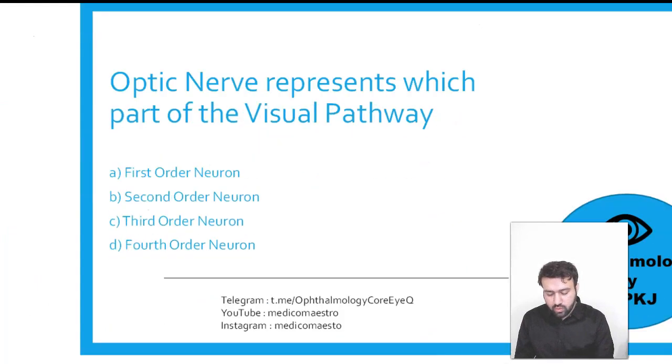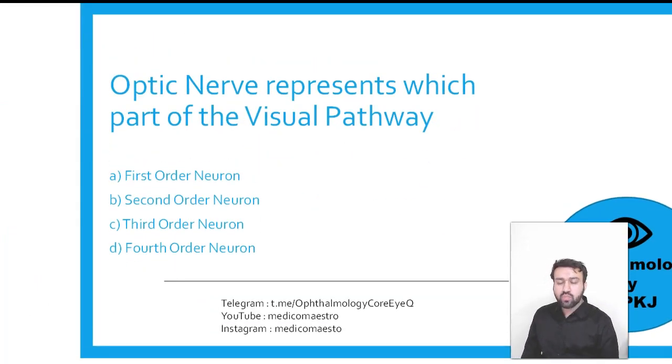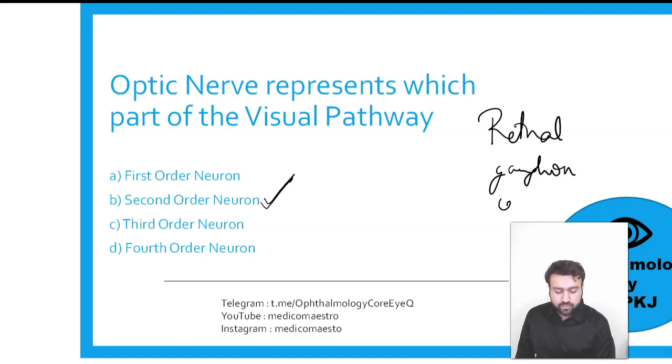So this first one, optic nerve represents which part of the visual pathway. So it's going to be second order, because optic nerve is basically the axons of the retinal ganglion cells. The axons continue as the optic nerve and ganglion cells are the second order neurons.